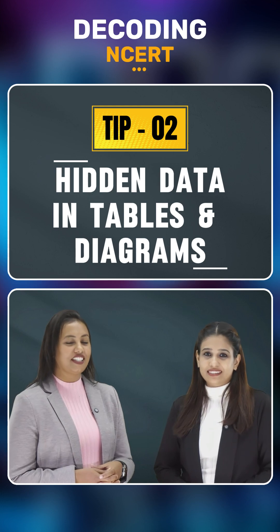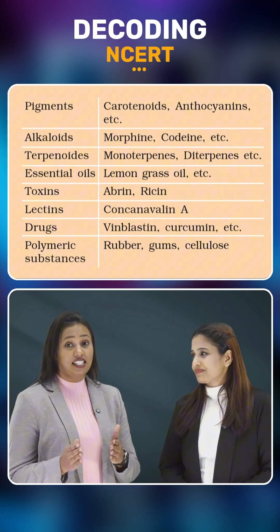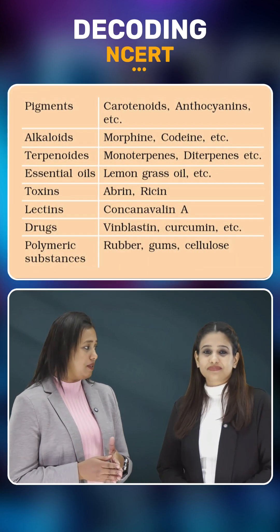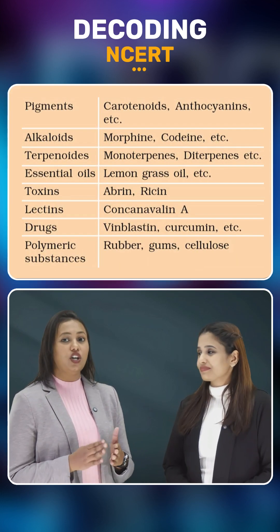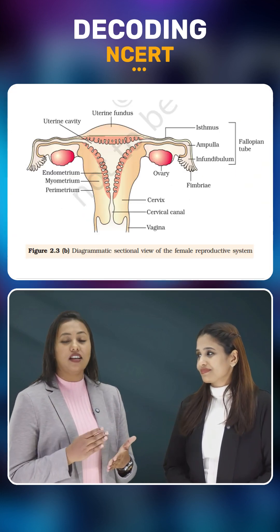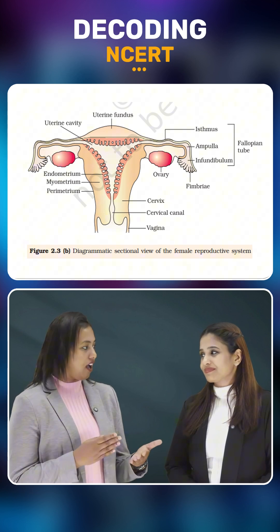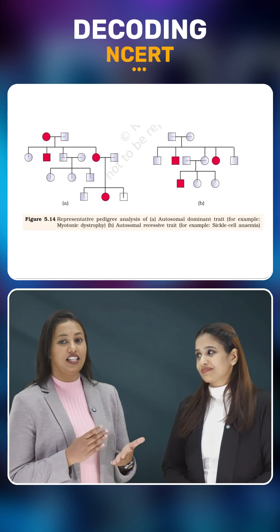Tip number two: hidden data in tables and diagrams. Do not just glance at the tables and diagrams — read the labels, legends, and the footnotes. These are very important.